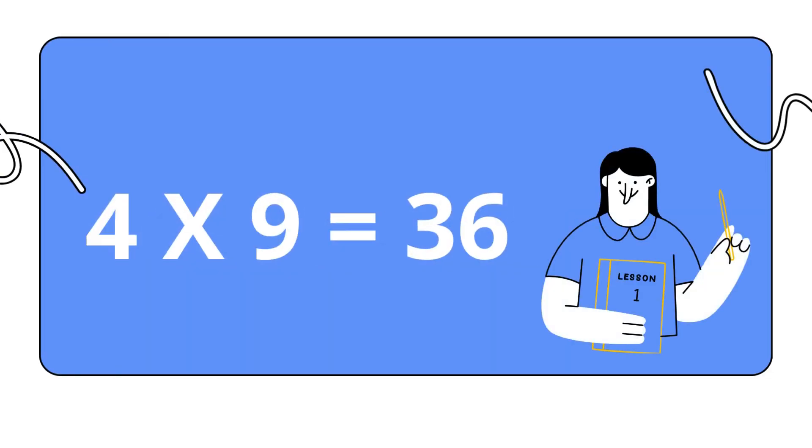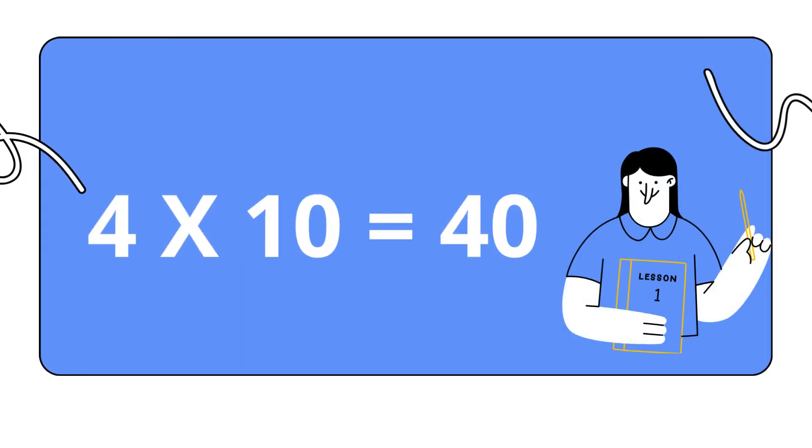Four nines are thirty-six. Four nines are thirty-six. Four tens are forty. Four tens are forty.